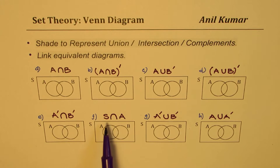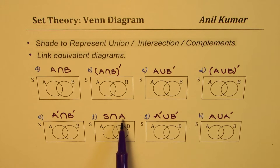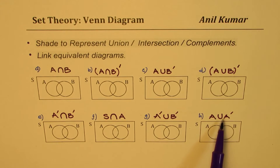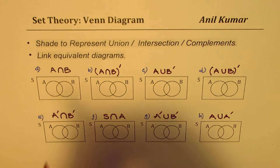S is the universal set — you see S written there. So we want: F is the intersection of the universal set S with set A, G is the union of complements of A and B, and H is the union of A with its complement A'. Okay, let's begin with the very first one, which says A∩B.